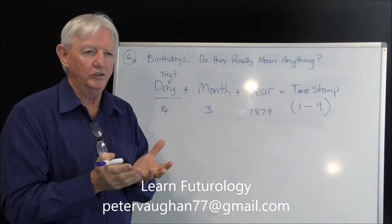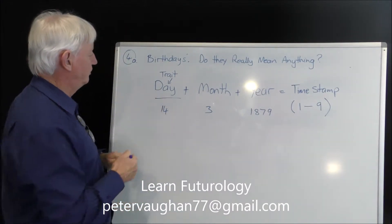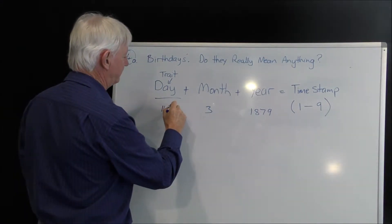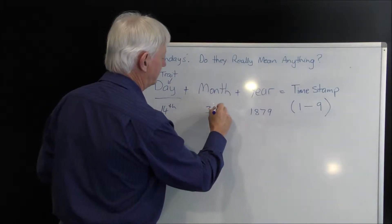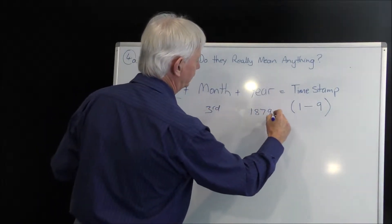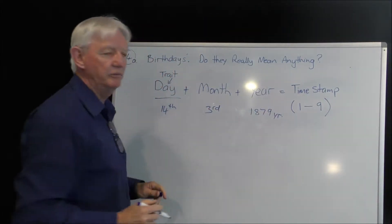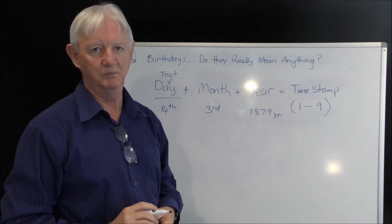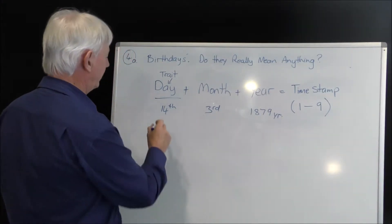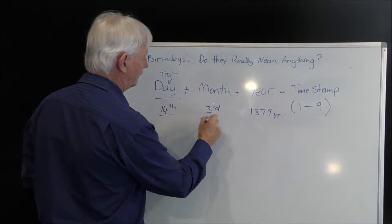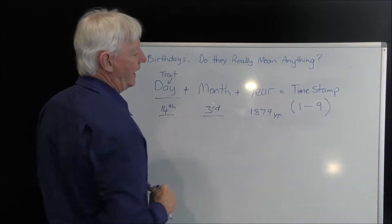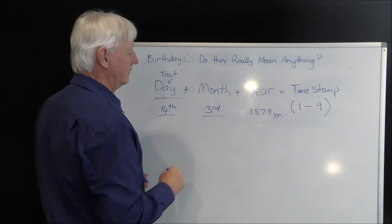Now here we have a person's birthday, which was the 14th day of the third month, 1897, was the year. That happens to be Albert Einstein's birth date. So by taking that, he had the 14th of March every year after he was born, just the same.